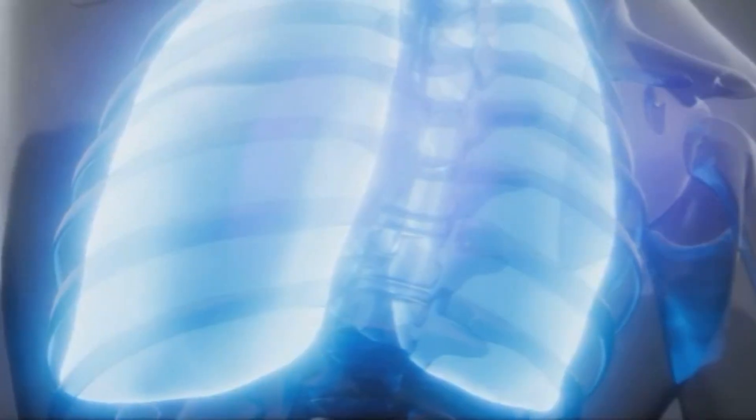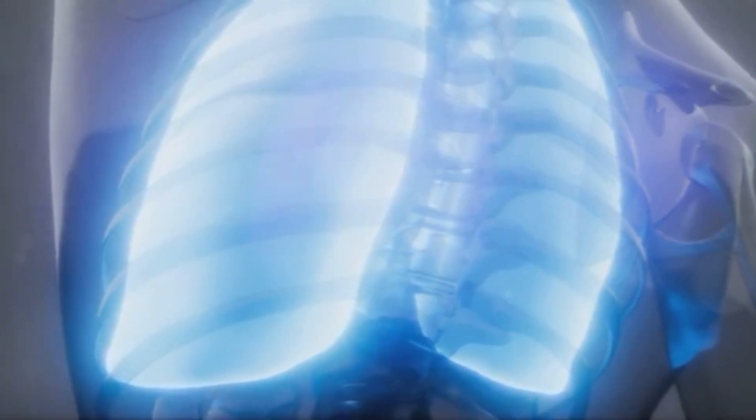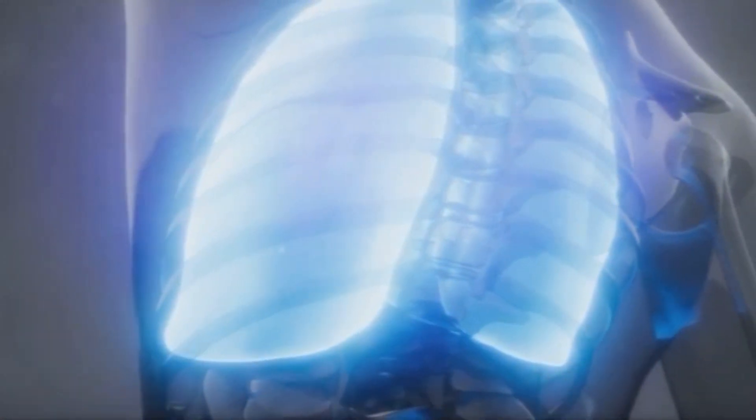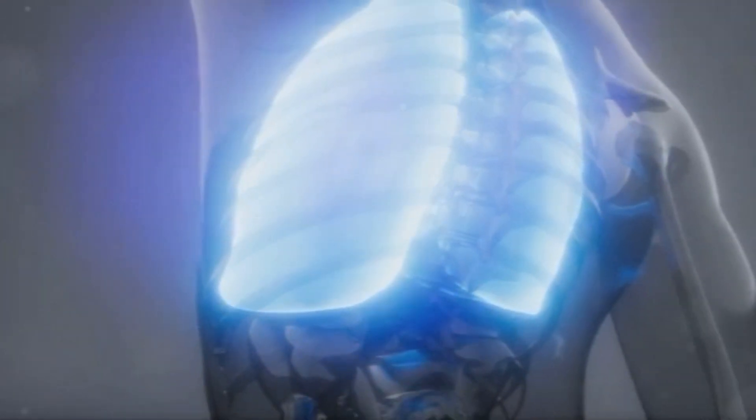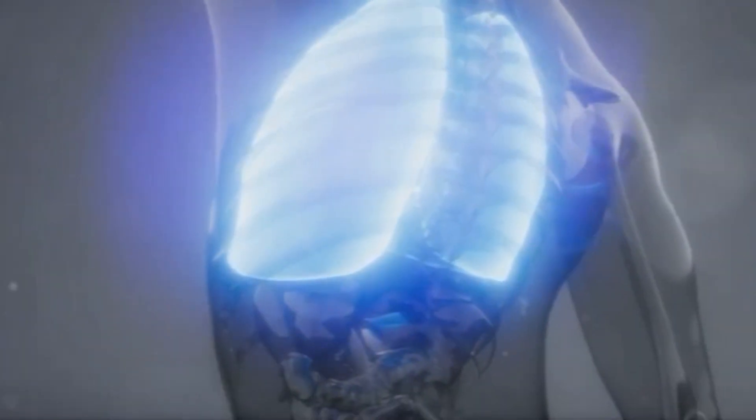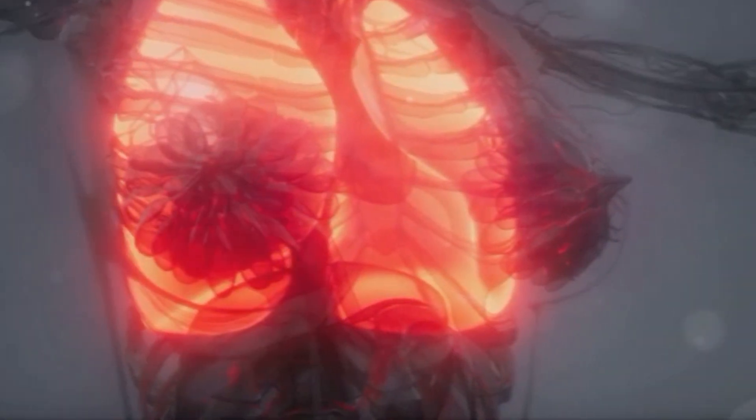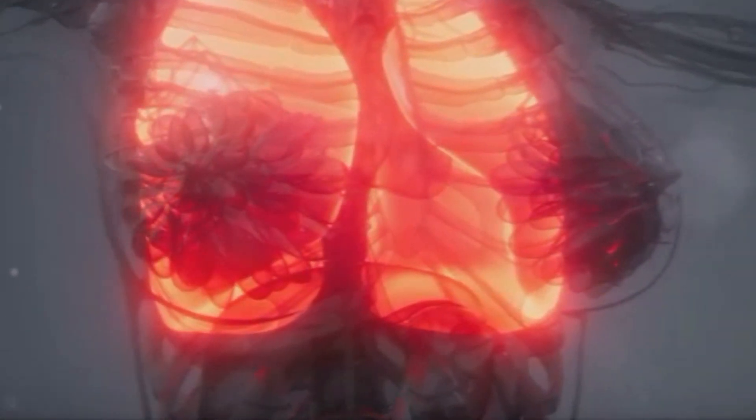Lung cancer often starts in the cells lining these tubes. These cells can become abnormal and multiply uncontrollably, leading to the formation of cancerous growths. As cancer cells grow, they can form a tumor, making it hard to breathe.